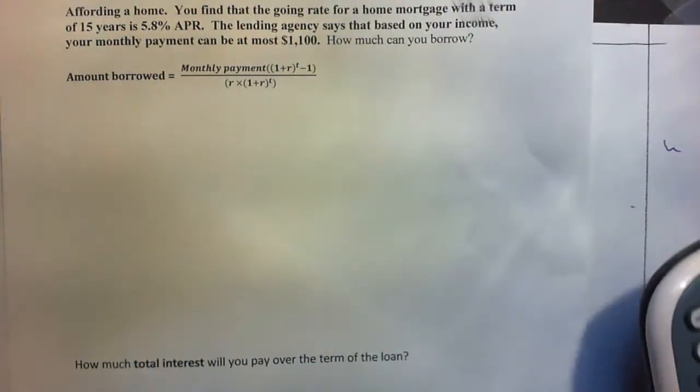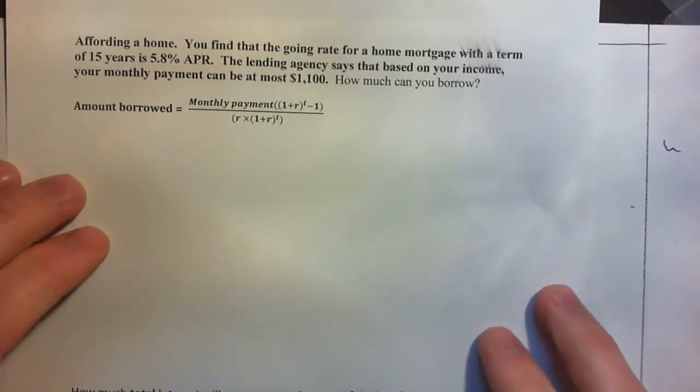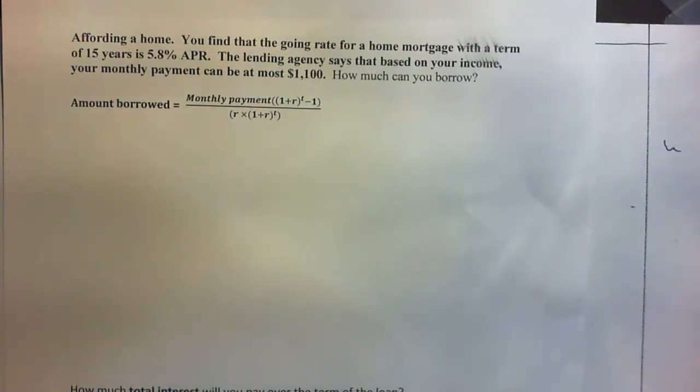Affording a home, you find that the going rate for a home mortgage with a term of 15 years is 5.8% APR. The lending agency says that based on your income your monthly payment can be at most $1,100. How much can you borrow?